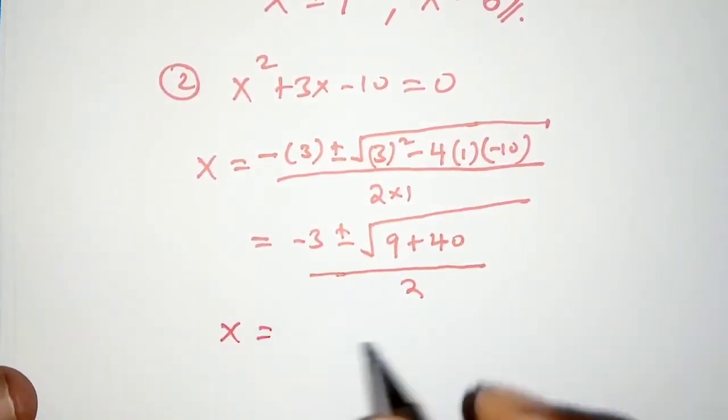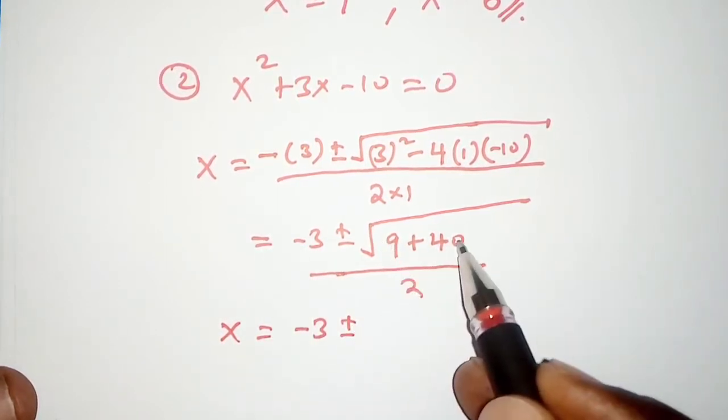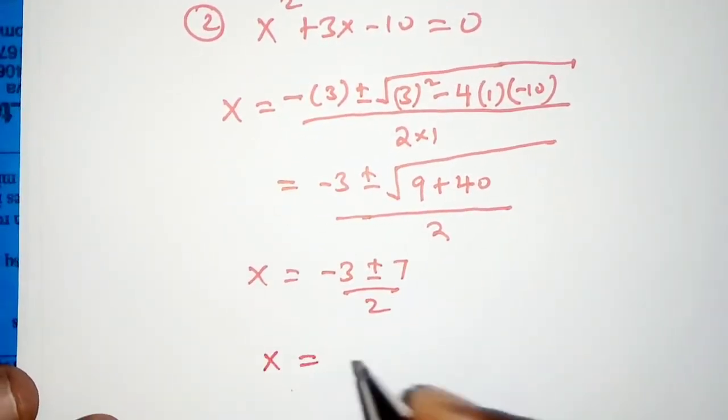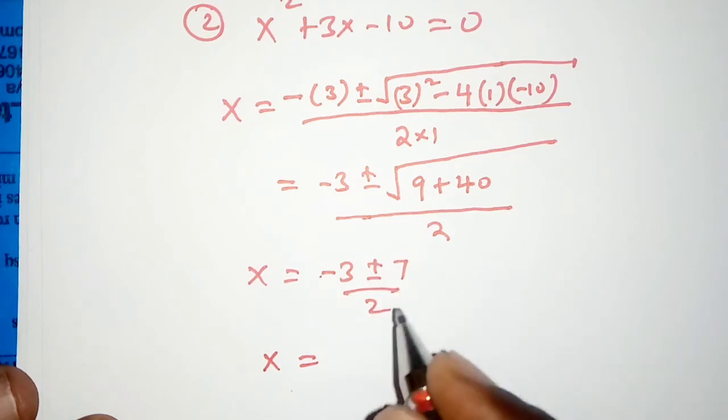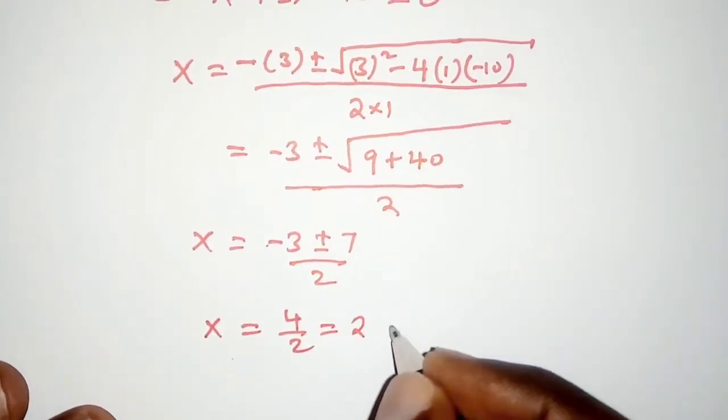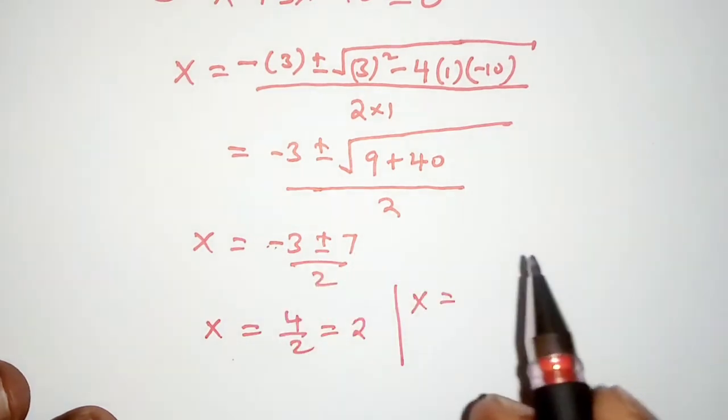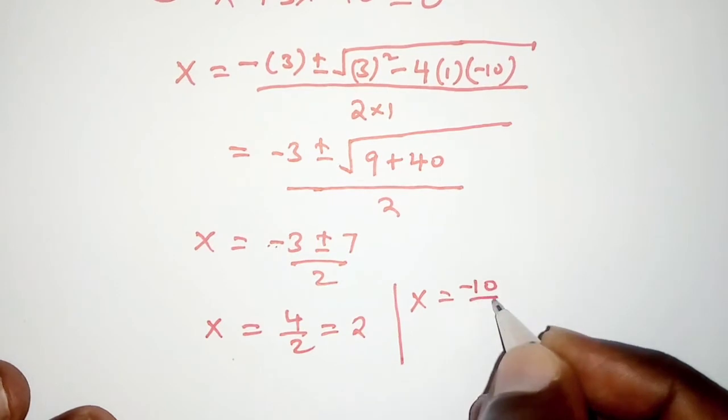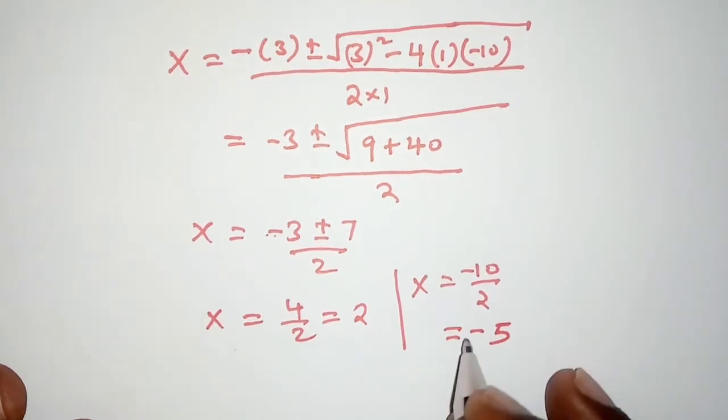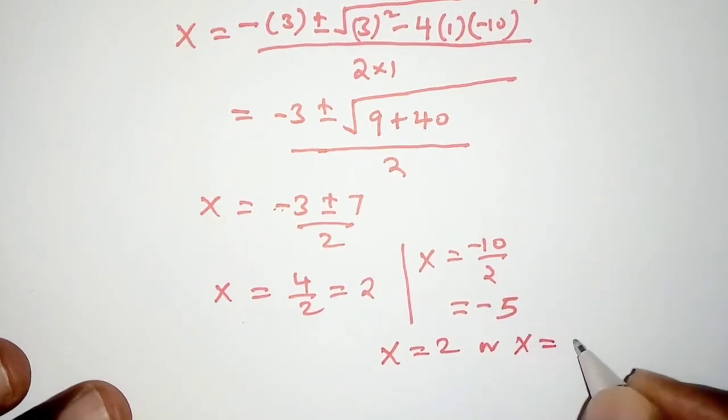So x becomes negative 3 plus or minus, this is 49, square root of 49 is 7, all over 2. The first value of x will be negative 3 plus 7 that is 4 divided by 2 and that is 2. The next value is negative 3 minus 7 that is negative 10, negative 10 divided by 2 that is negative 5. And finally we have the values of x as 2 or x is negative 5.